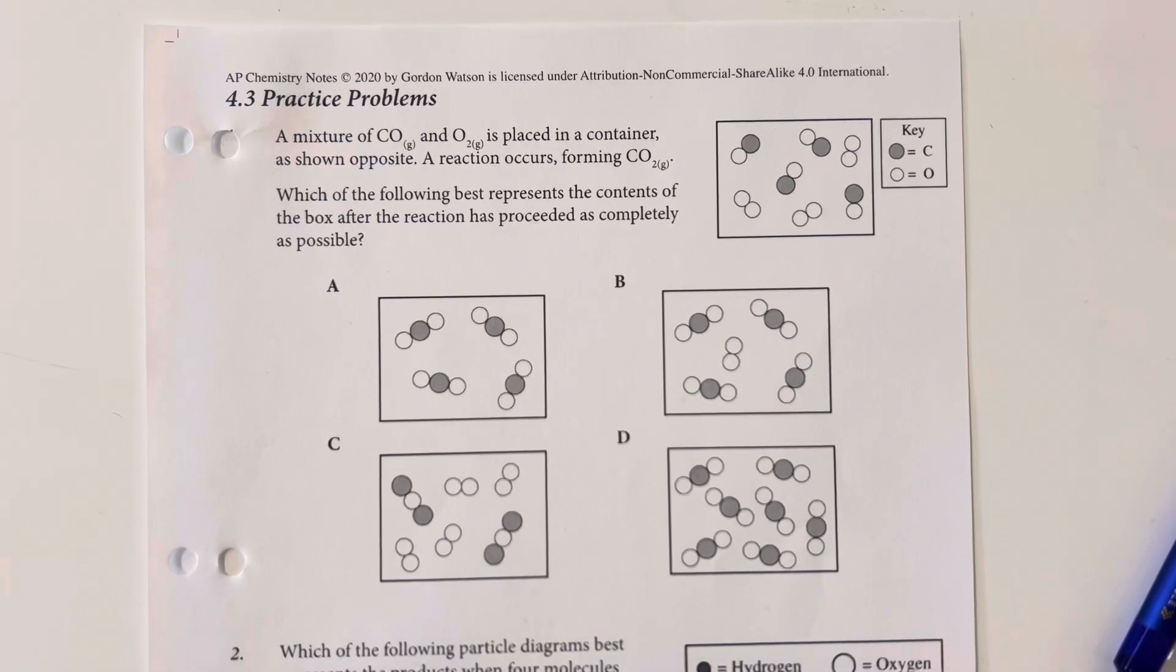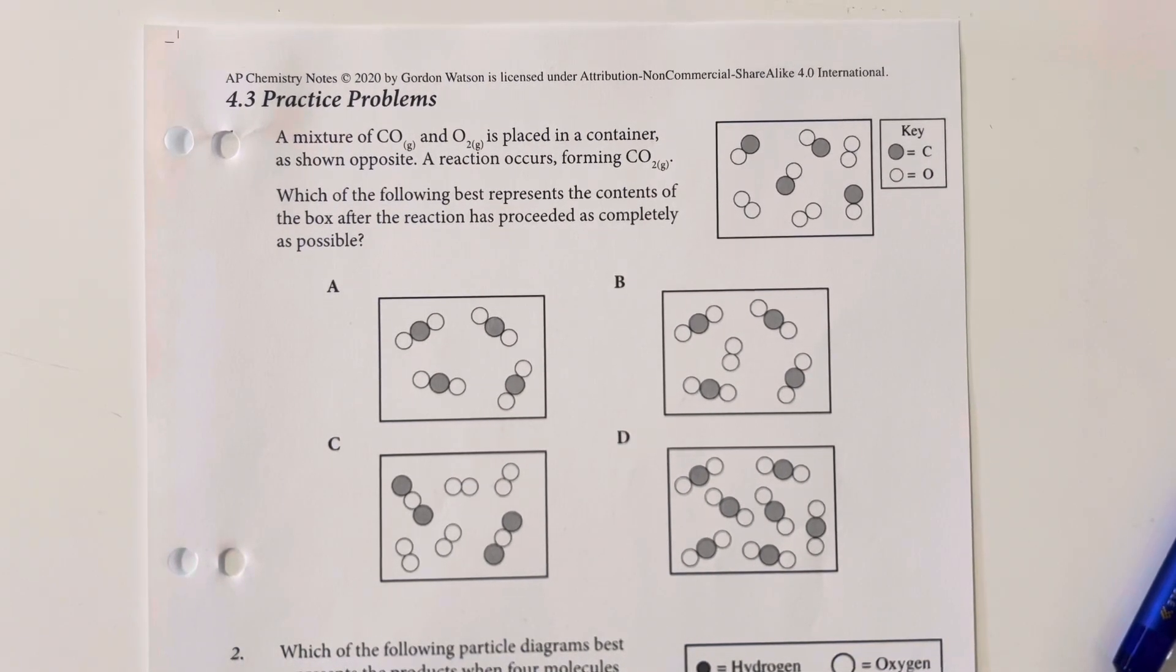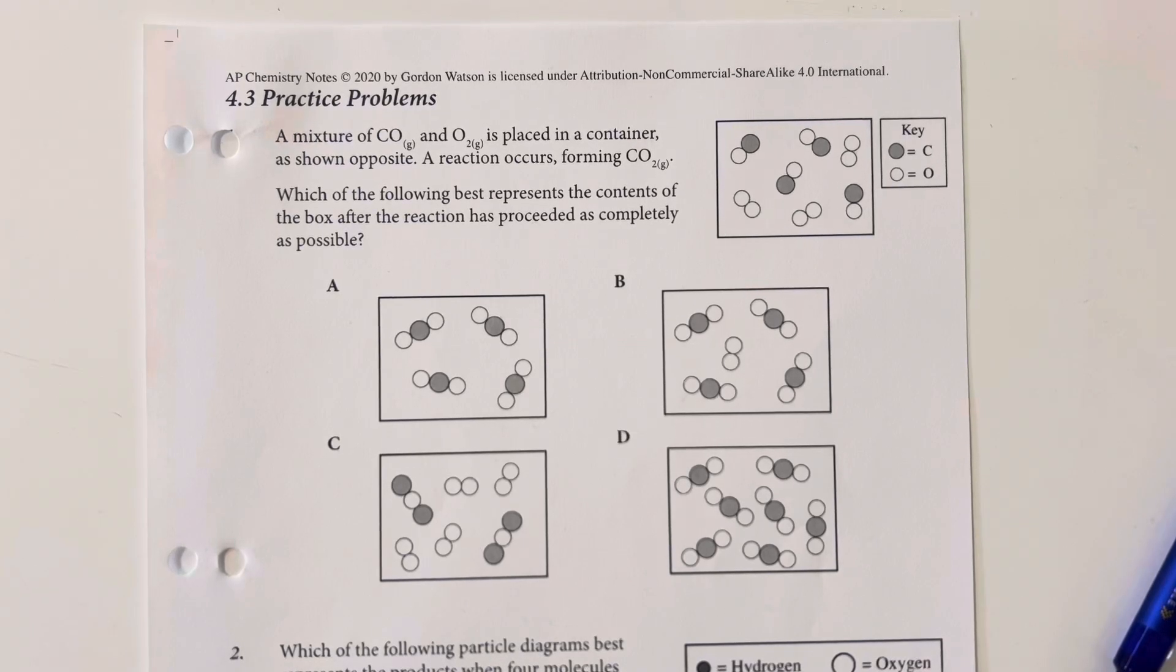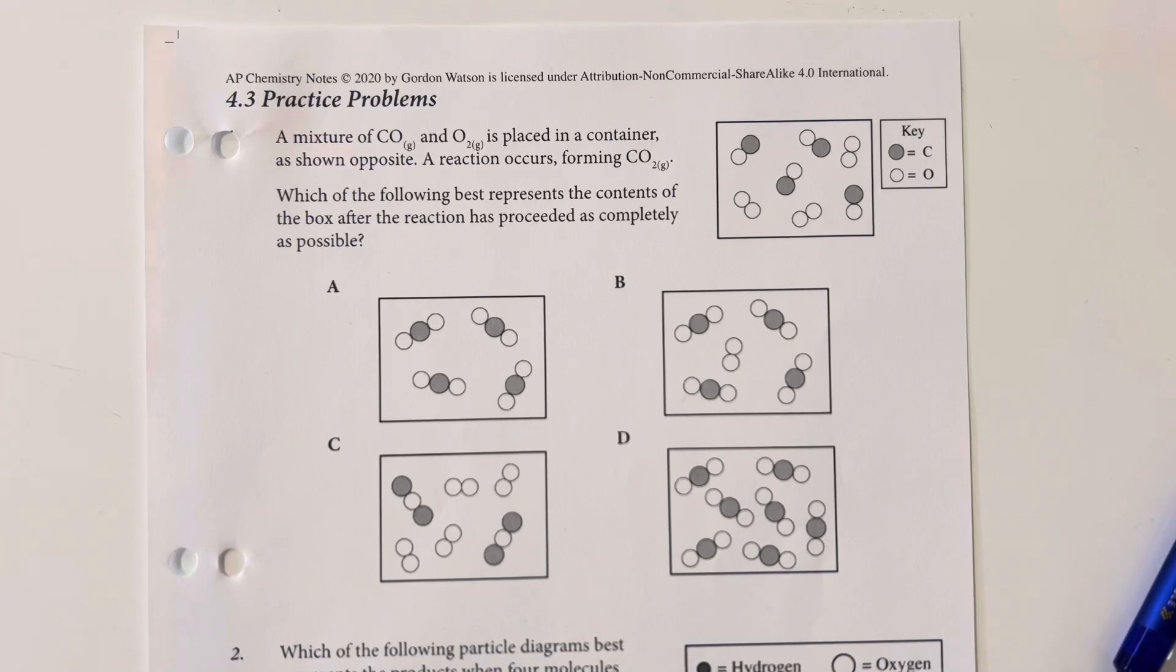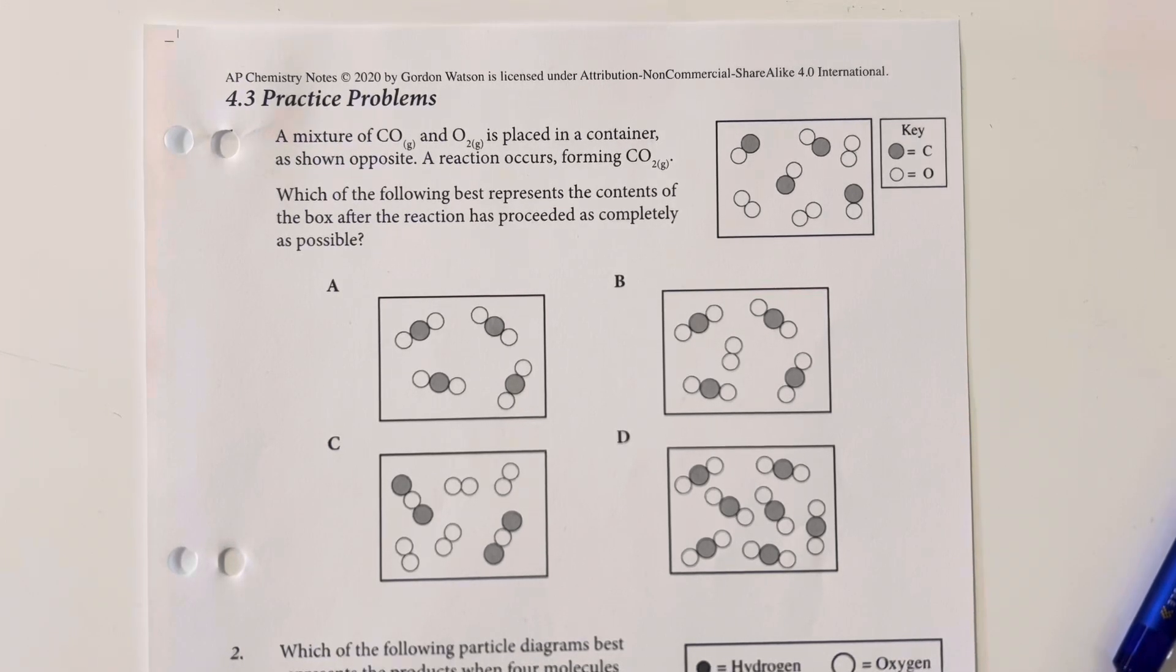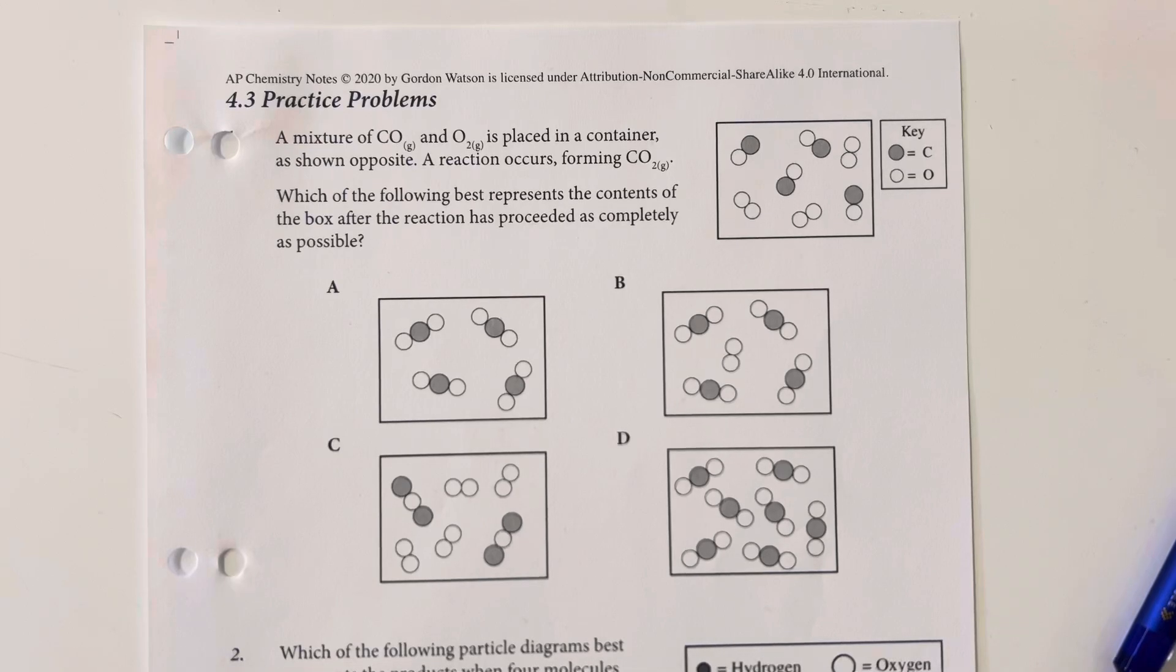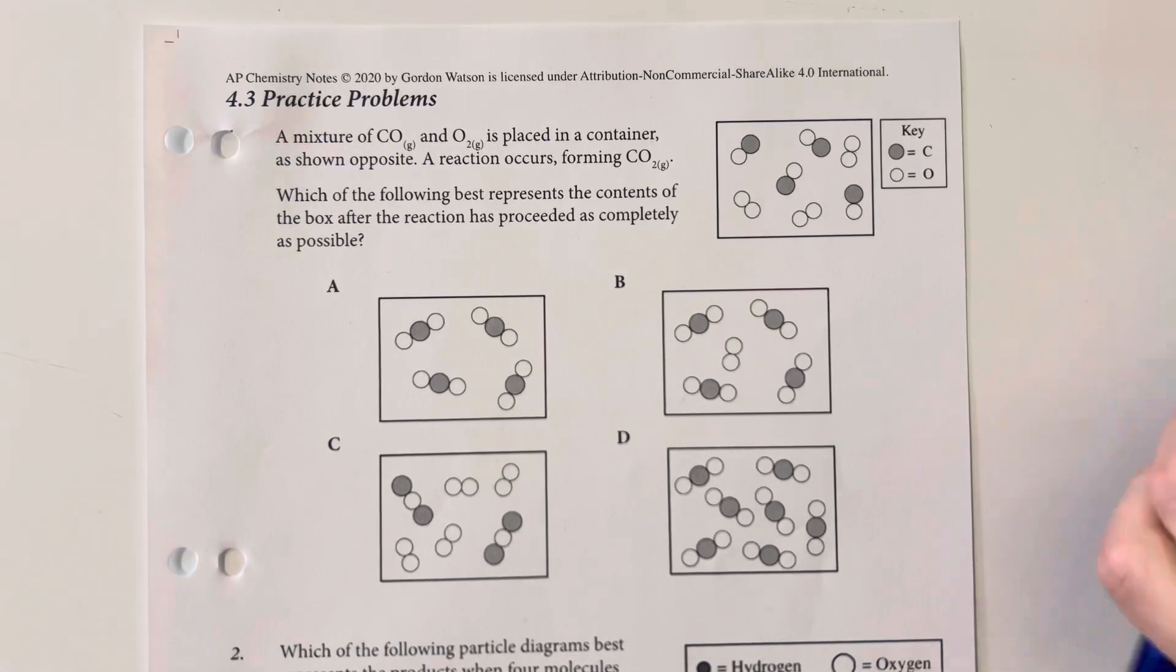Unit 4.3 Practice Problems. A mixture of carbon monoxide and oxygen is placed in a container, as shown opposite. A reaction occurs forming carbon dioxide. Which of the following best represents the contents of the box after the reaction has completely finished?